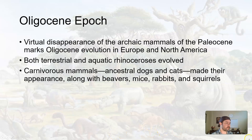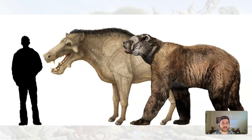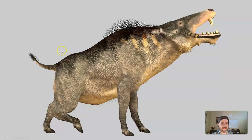Entelodonts also kind of evolved — these are ancestors of modern pigs and other hoofed animals — along with a more evolved form of horse. Here is one of those entelodonts: this organism is a really weird-looking thing, shown next to a grizzly bear for reference. It's just huge — this pig-warthog-horse thing. Here's another image; definitely wouldn't want to come across one of these things. That does not look enjoyable.